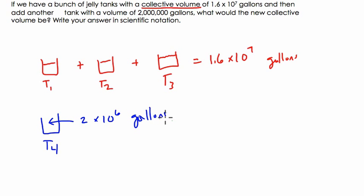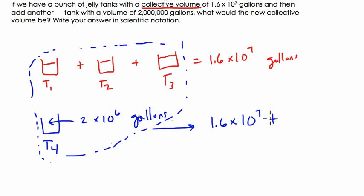They want to know, what would the new collective volume be? In other words, if you add this new group of tanks, what would you get all together? So this is an addition problem, and I'm going to do it in scientific notation. We're going to add these two numbers. We're adding 1.6 times 10 to the 7th to 2 times 10 to the 6th.